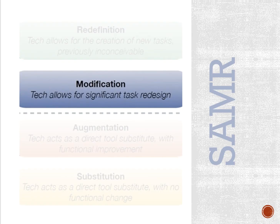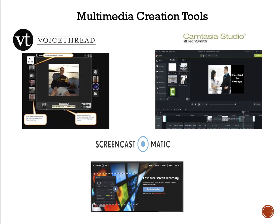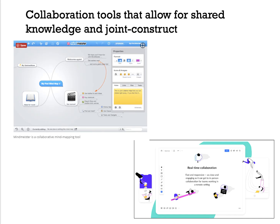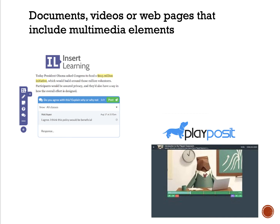The next level is modification. This is where you use technology and it allows for a significant task redesign. The outcome will be the same, but the enhanced products such as your assessment or activity will have changed. Some examples of modification are multimedia creation tools such as using VoiceThread or creating videos or screencasts through Screencast-O-Matic, Camtasia, or VidGrid. You can also use collaboration tools and create webpages that include multimedia elements such as InsertLearning, where you can take a webpage and insert quizzes and discussion boards, or PlayPosit, which allows you to take a video off the internet and add additional questions that pop up while a student is watching it.